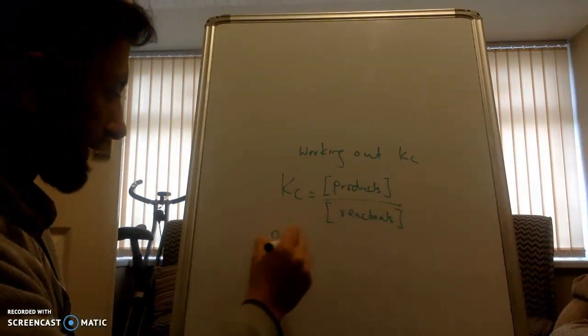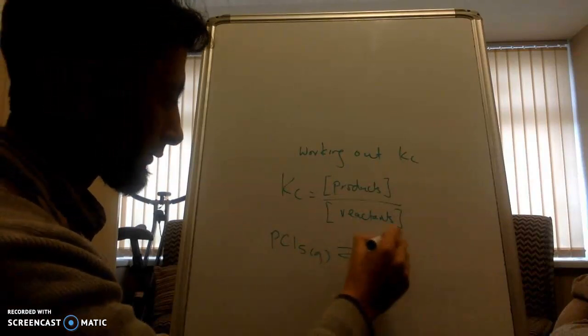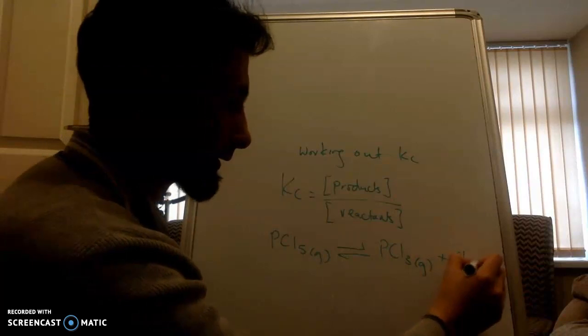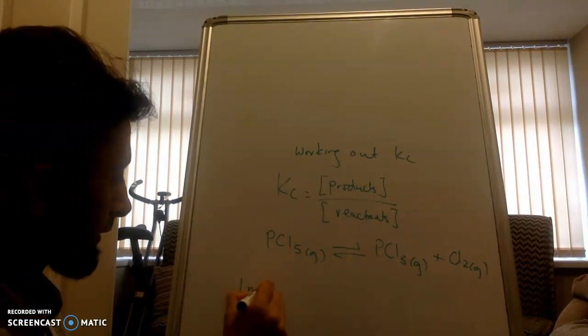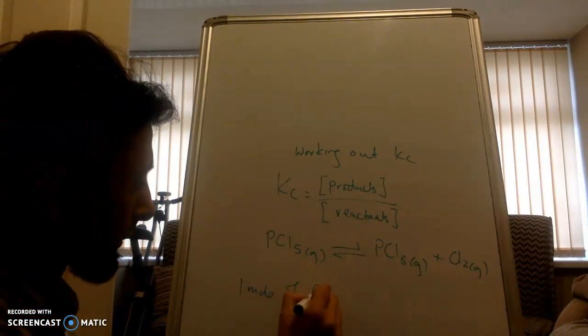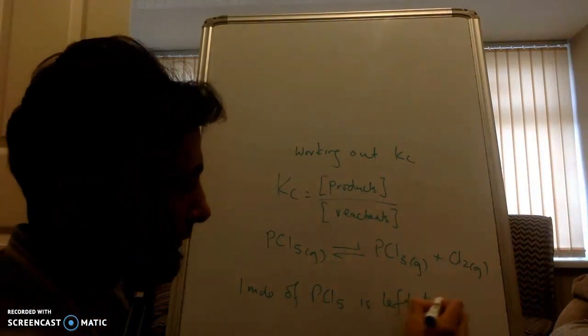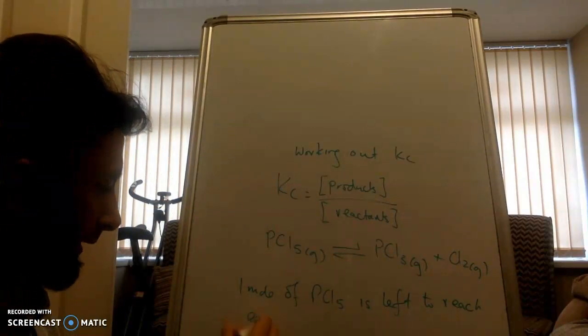Now, PCl5 decomposes to PCl3 and chlorine gas. Okay, say one mole of PCl5 is left to reach equilibrium.